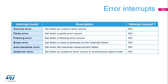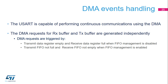Several error flags can be generated. The overrun error flag is set when an overrun error occurs. The parity error flag is set when a parity error occurs. The framing error flag is set when a framing error occurs. The noise error flag is set when noise is detected on the received frame. The auto baud rate error flag is set when the baud rate measurement failed. The underrun error flag is set when an underrun error occurs in synchronous slave mode. DMA requests can be generated when receive buffer not empty or transmit buffer empty flags are set when FIFO management is disabled, or when the transmit FIFO not full and receive FIFO not empty flags are set when FIFO management is enabled.